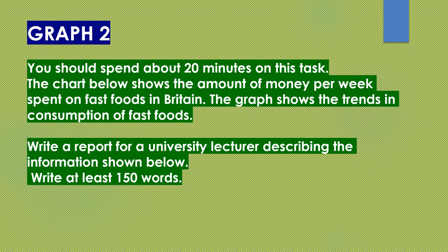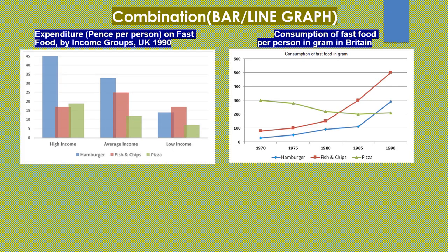Moving on to Graph 2: you should spend about 20 minutes on this task. The chart below shows the amount of money per week spent on fast foods in Britain, and the graph shows the trends in consumption of fast foods. Write a report for a university lecturer describing the information shown below. Write at least 150 words. This graph is a combination of a bar graph and a line graph. The bar graph shows expenditure in pence per person on fast food by income groups in the UK in 1990, while the line graph shows consumption of fast food per person in grams in Britain.